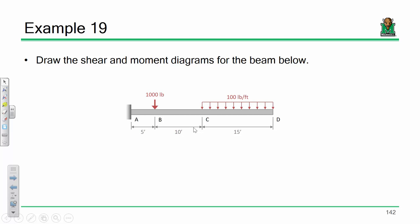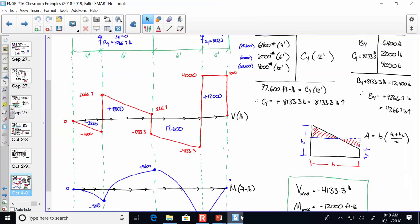A couple of these are pretty easy to determine. The reaction at A in the X direction is zero — there are no forces acting horizontally on the structure at all. Technically there is a horizontal reaction because it's a fixed end, but it's zero. The vertical reaction is pretty simple because you can just add up all the loads.